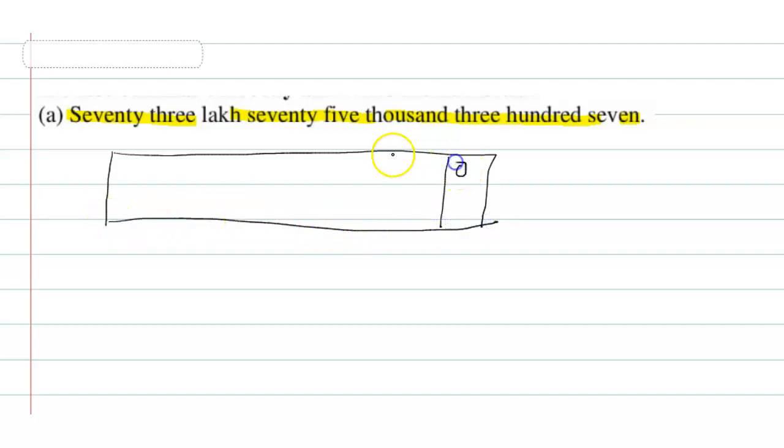First is ones, tens, hundred, thousand, ten thousand, lakh and ten lakh. So first here 73 lakh.